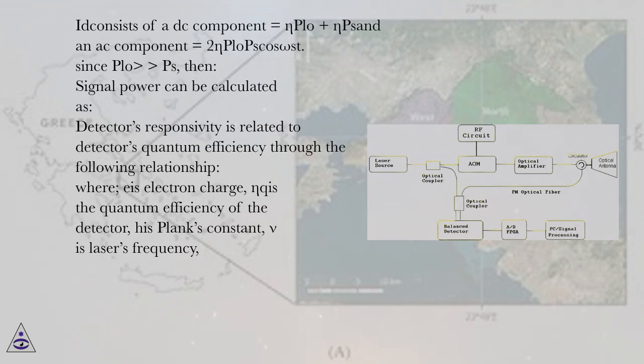Detector's responsivity is related to detector's quantum efficiency through the following relationship: Where e is electron charge, ηₖ is the quantum efficiency of the detector, h is Planck's constant, ν is laser's frequency.